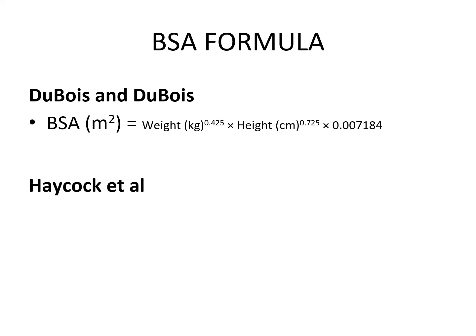According to Haycock et al, BSA is equal to weight in kg raised to the power of 0.5378 multiplied by height in cm multiplied by 0.03964, which is a constant.